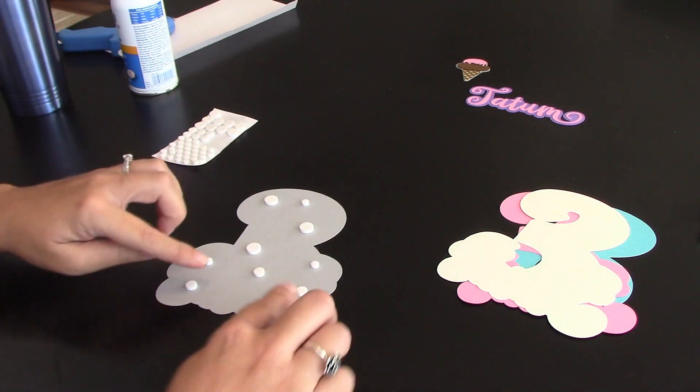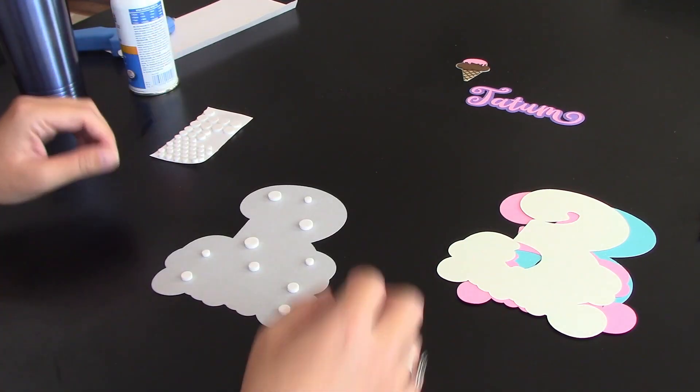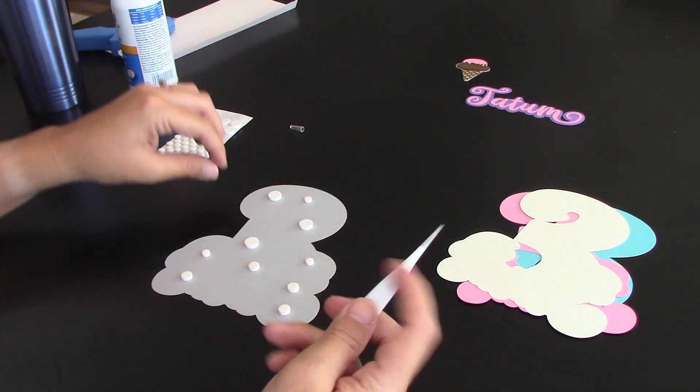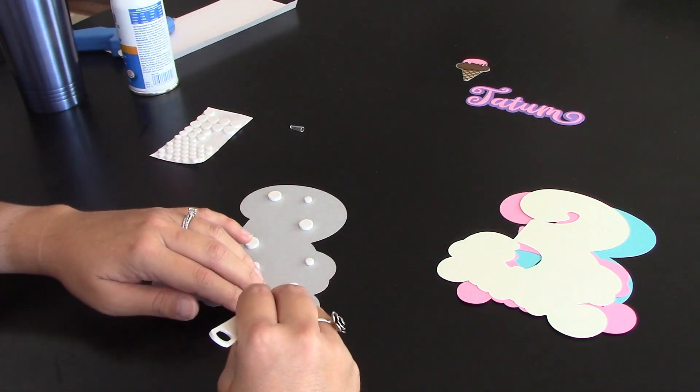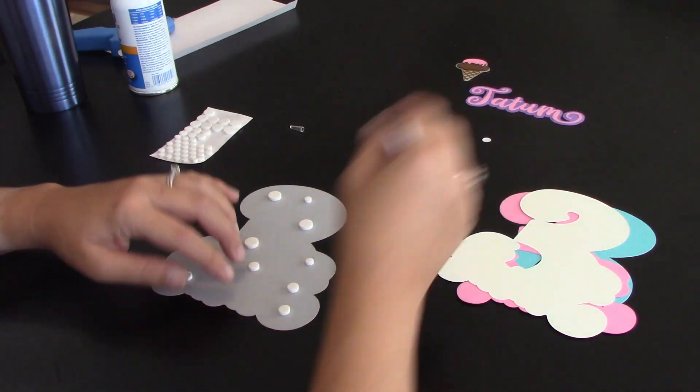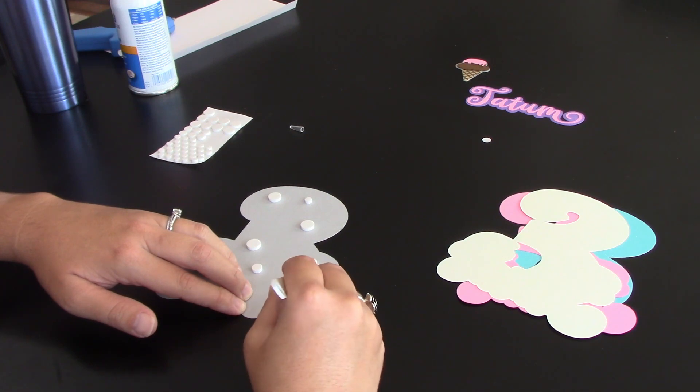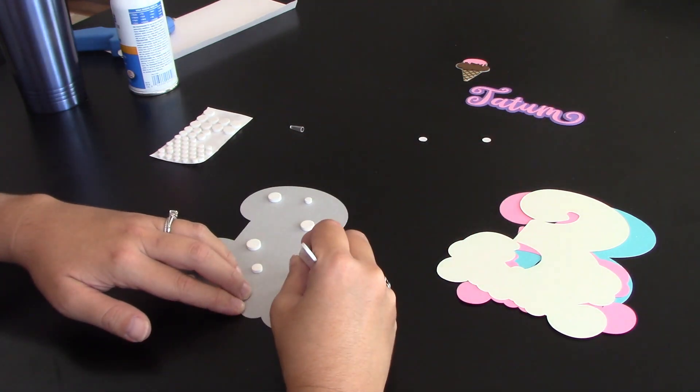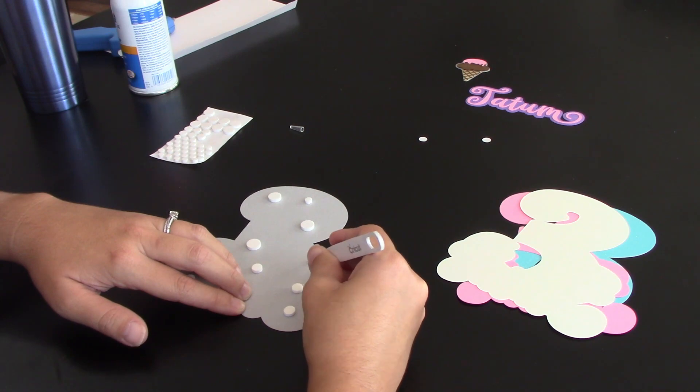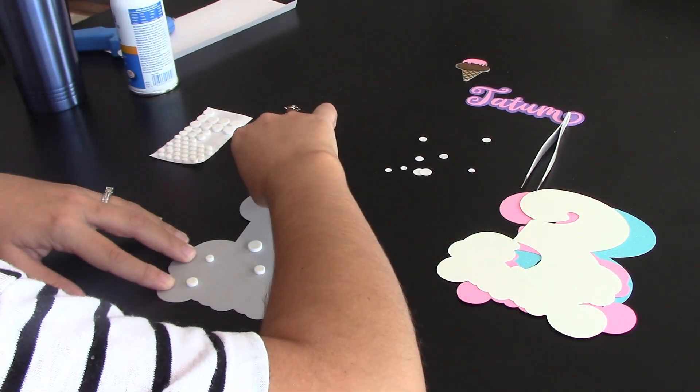So there they all are. They're stuck on there and now I need to come and peel the top layers off of all of them. Sometimes the tops are a little hard to get off. I'm going to use my tweezers. There's one and you want to give it just a minute to actually adhere to your paper backing before you start trying to take these tops off or else you're just going to peel the whole dot up.